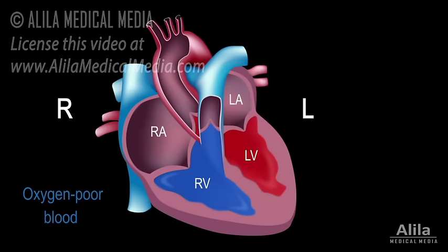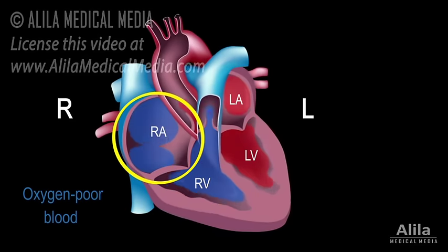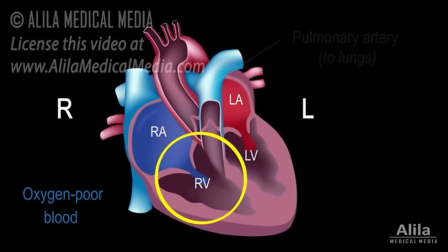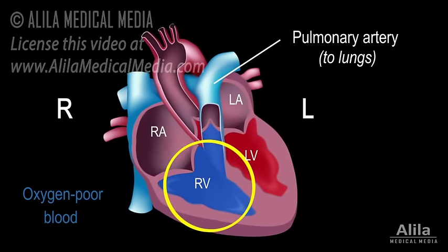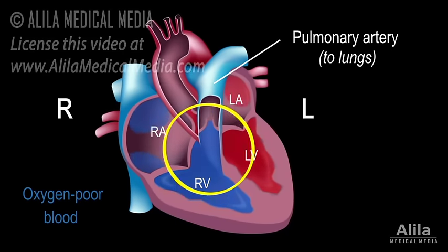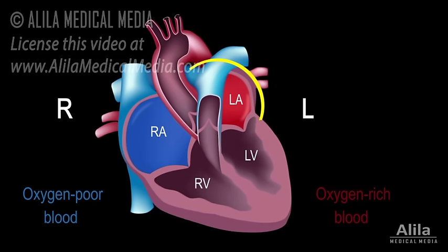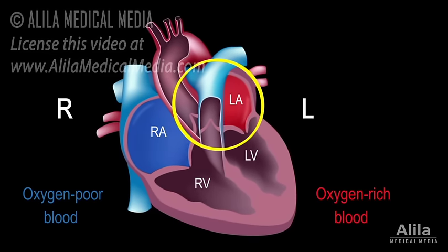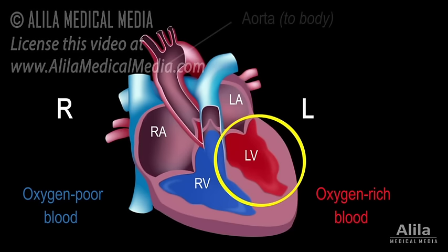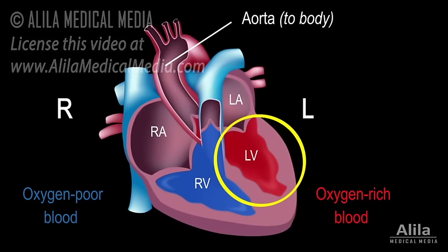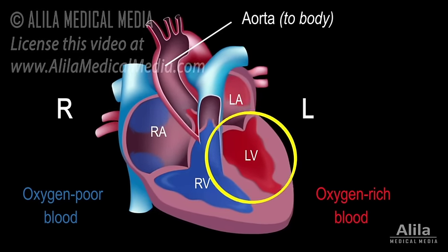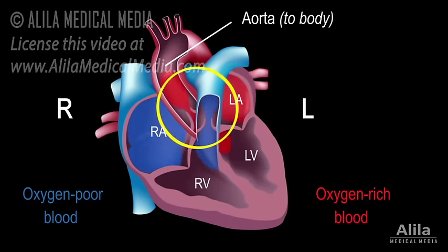In normal circulation, oxygen-poor blood from the body returns to the right side of the heart, where it is pumped into the pulmonary artery and to the lungs. After being oxygenated, oxygen-rich blood from the lungs returns to the left side of the heart to be pumped into the aorta and out to the body.